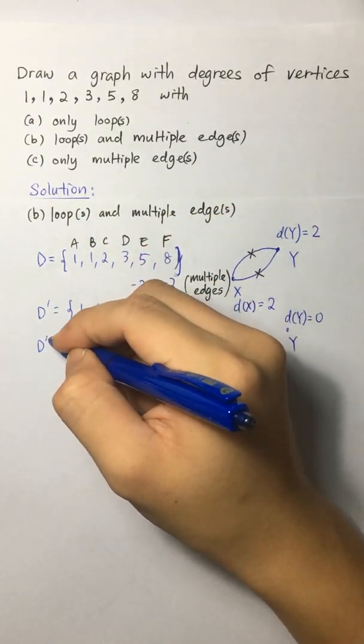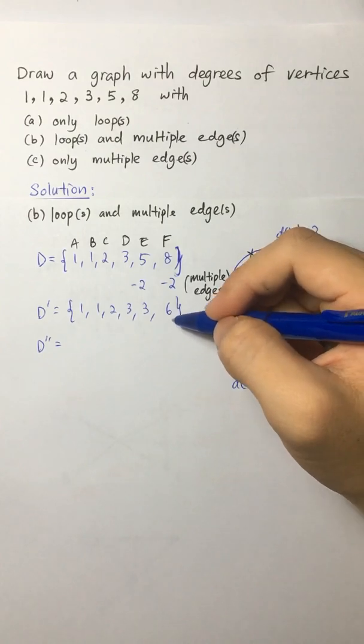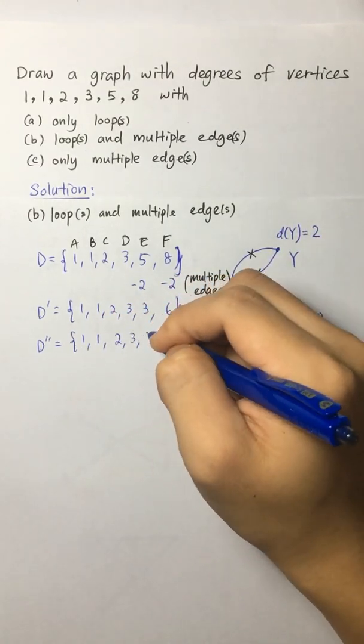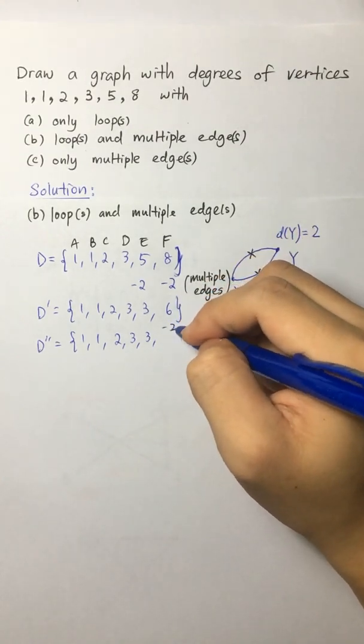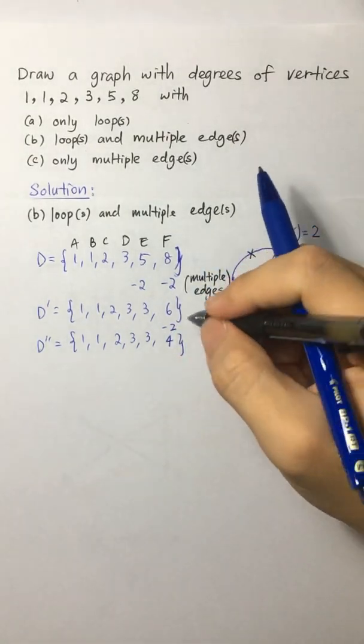So based on the last video, a loop is actually contributing to 2 of the degree of vertices. So let's say we are having a loop here. So I can just minus 2. So 6 minus 2, we get 4. And now there's a loop here.